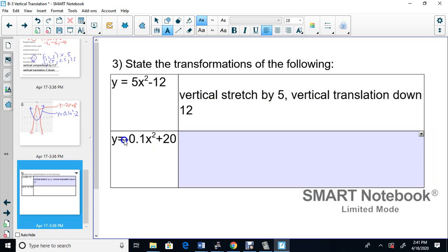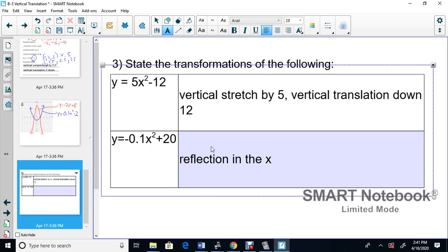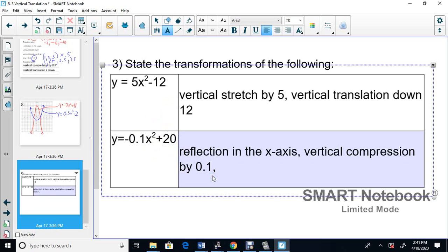Now here, the negative in the front tells us there's a reflection, we're on the second equation. So the negative in the front tells us there's a reflection in the x-axis. Next, the 0.1, since it's smaller, it's a decimal, it's between negative 1 and 1, this 0.1 tells you it's a vertical compression by 0.1. And finally, the 20, it's positive, so it goes up by 20. So now we have a vertical translation 20 up, or up 20, whichever way you want to write that.